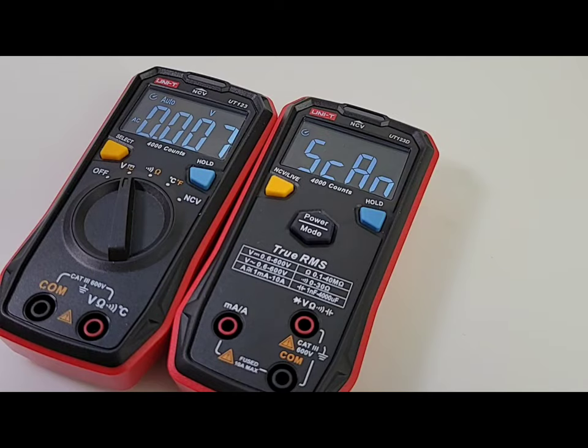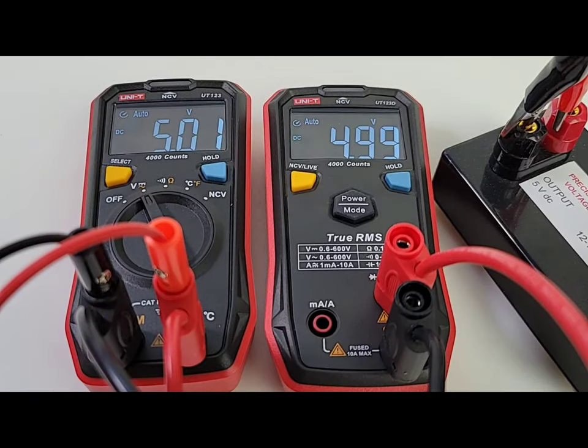Starting things off as always with the DC precision voltage test. We should be looking at 5.00 volts. Look at that! One count out in each separate way. 4.99 for the 123D and 5.01 for the 123. There is no winner - one was a little high and one was a little low.